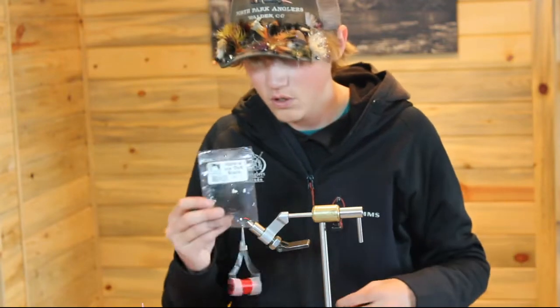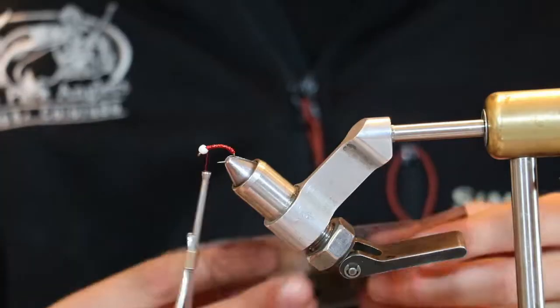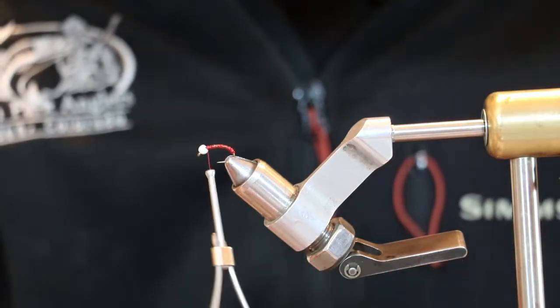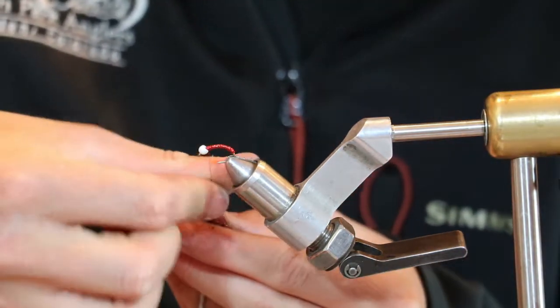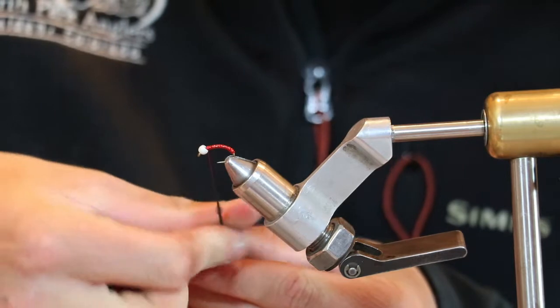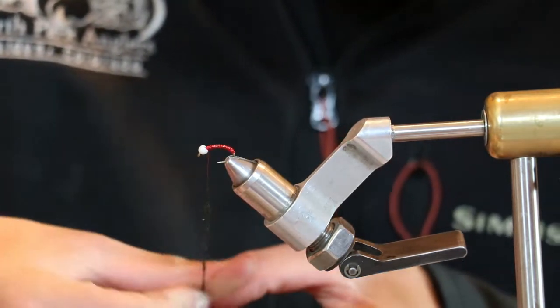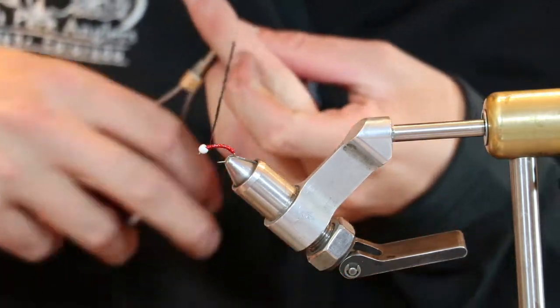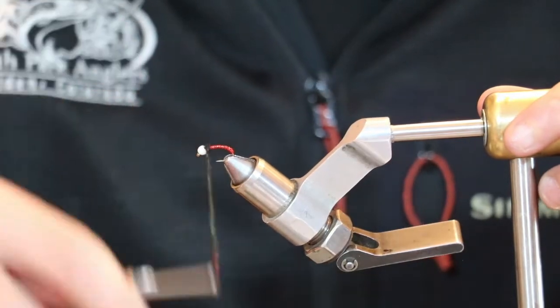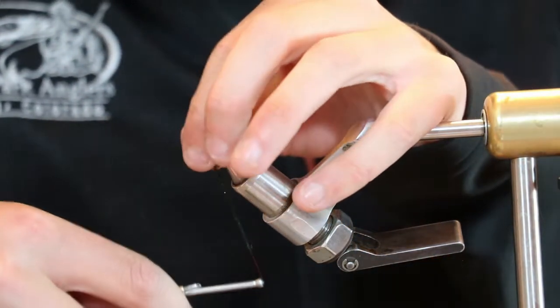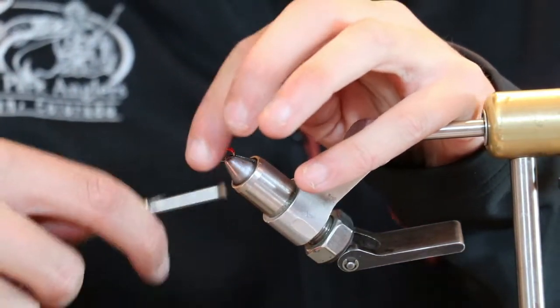And then to finish it off, you'll grab some Hare's Ice Dub in black. Get a nice pinch of it and start that right there, and build up just a nice little collar right behind the bead there.